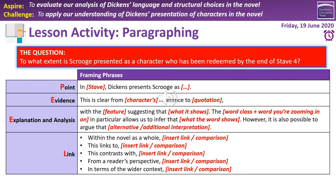We're using PEEL paragraphs: a Point, Evidence, Explanation/analysis, and Link. The frame is: 'In Stave [X], Dickens presents Scrooge as...' Then build in your evidence — a quotation embedded in a sentence such as 'It's clear from [reference] that...' You can adjust the wording to make it fit. Then explanation and analysis: talk about what the evidence shows, why it supports your point, zoom in on a particular word or phrase, identify a metaphor or simile, or infer meaning from a specific word.